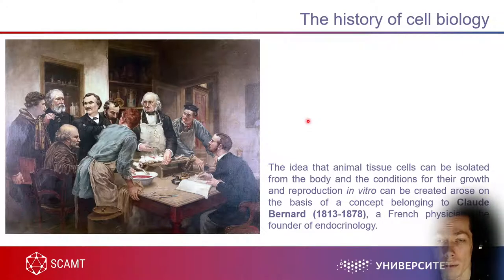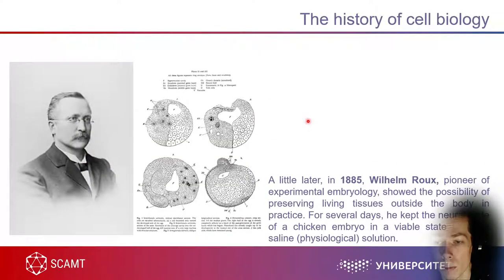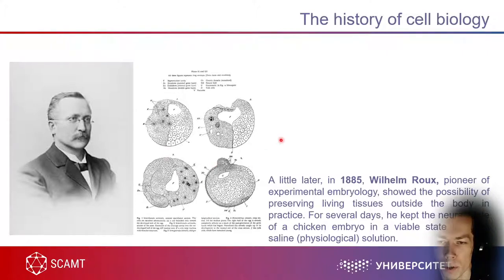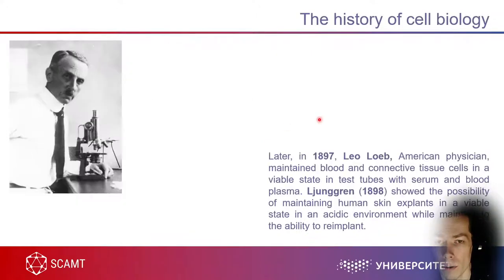A bit later, about 20 years later, William Roux, who was an embryologist, showed the first possibility to preserve living tissues outside the body — it was a chicken embryo. In the 1880s there were no options to produce pictures, so there are some drawings and paintings of the chicken embryo and how it divided.